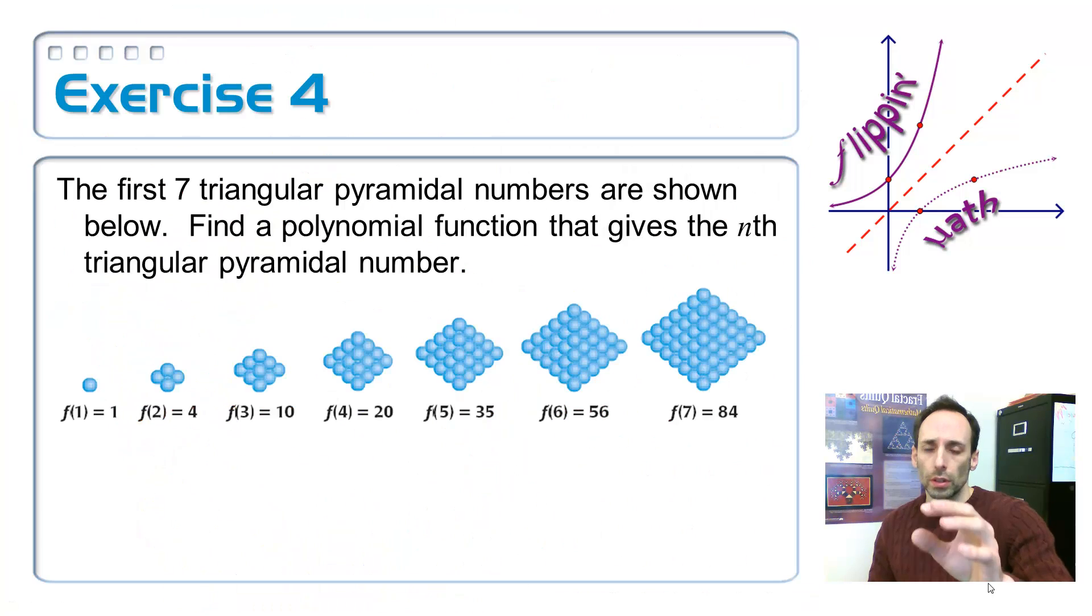Here it is on Exercise 4 where we're trying to apply that. The first seven triangular pyramidal numbers are shown below. Find a polynomial function that gives the nth triangular pyramidal number. This is another example of a figurate number.